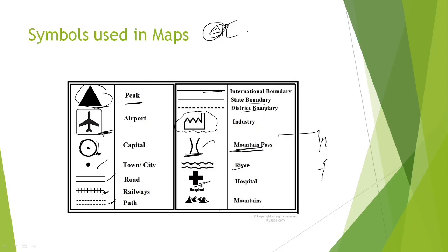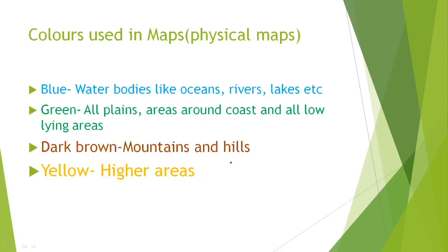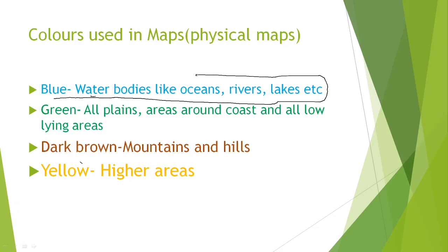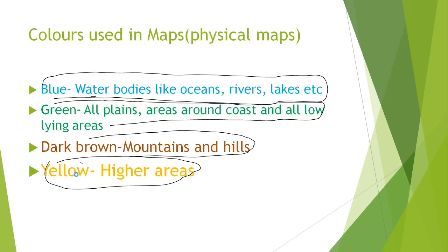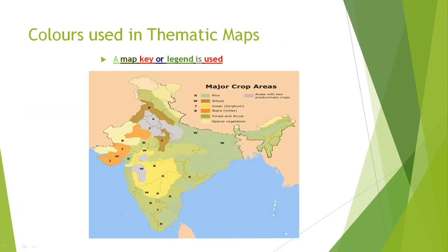On maps, blue color represents oceans and rivers. Green color represents plains, dark brown represents mountains and hills, and yellow color represents other land features. Thematic maps use different colors for different data.